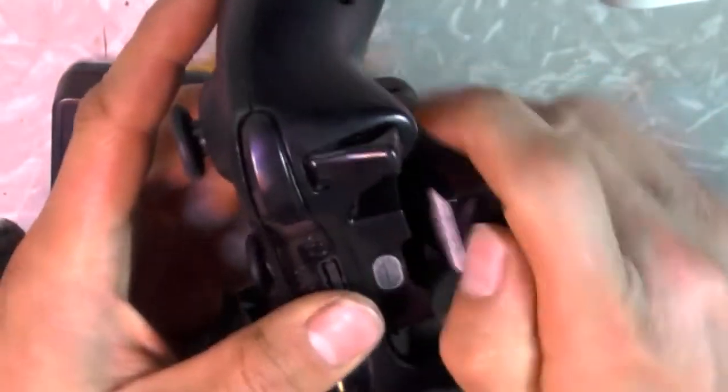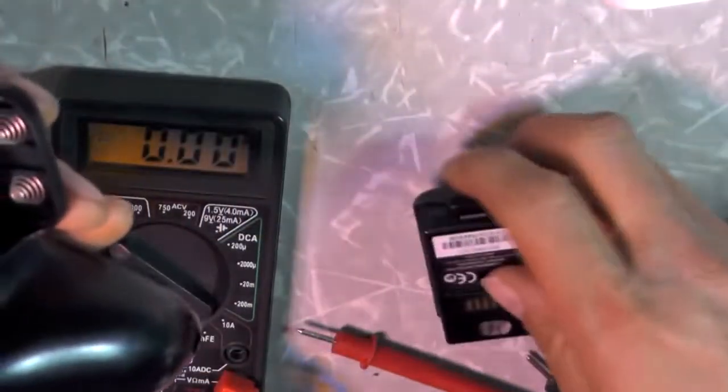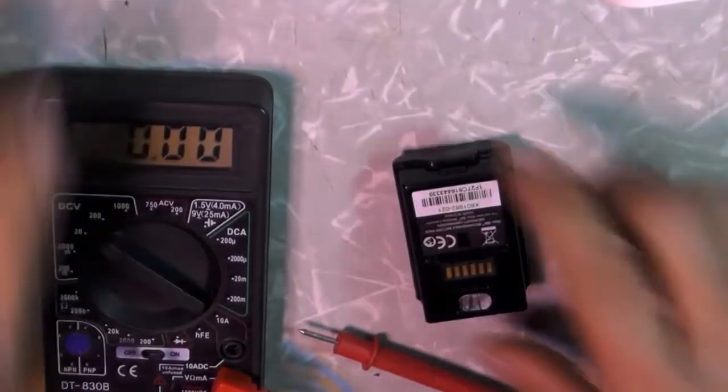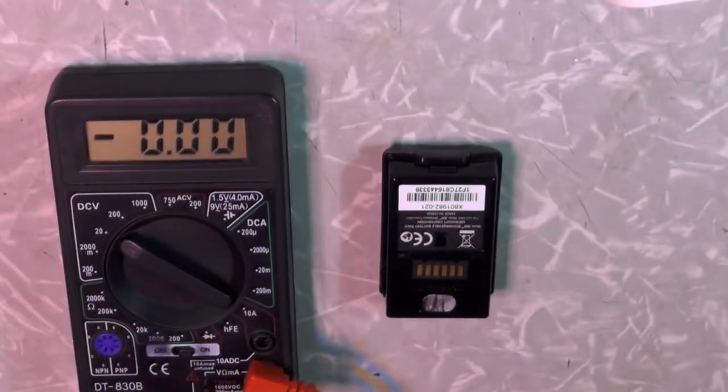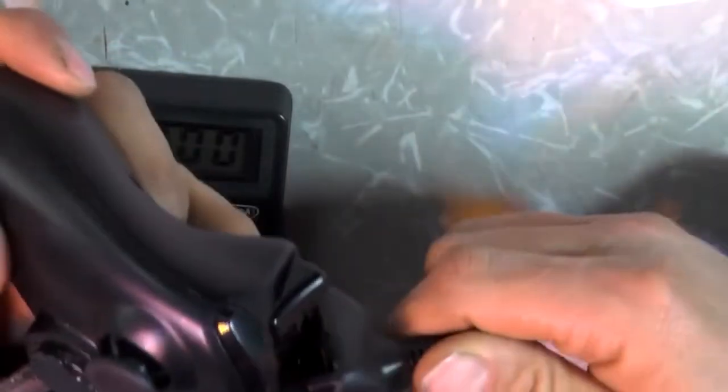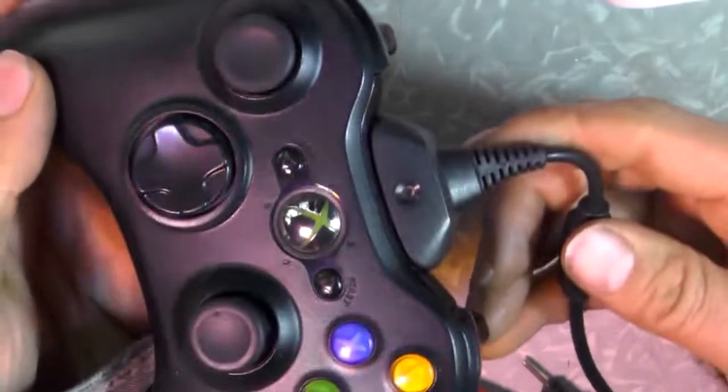I watched some videos where people used a paper clip to reset the battery's controller by bridging the first and fifth contacts and then the second and sixth contacts. In all those cases this USB charger worked showing the green light. In my case it doesn't work at all, no light.